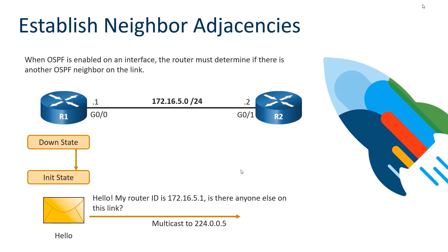When we begin our discussion of OSPF operational states, we need to focus on OSPF activation. OSPF is enabled on an interface, and your OSPF router must then determine if there's another OSPF neighbor on that same link. We start in the down state, and when we go to send a hello, we start to initialize. We say hello to a multicast target of 224.0.0.5.